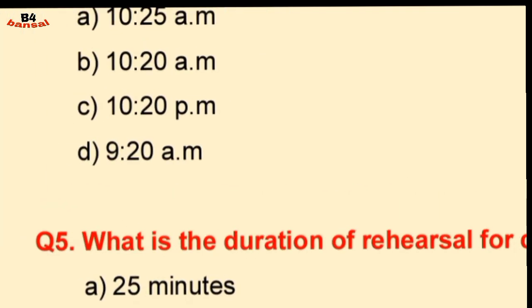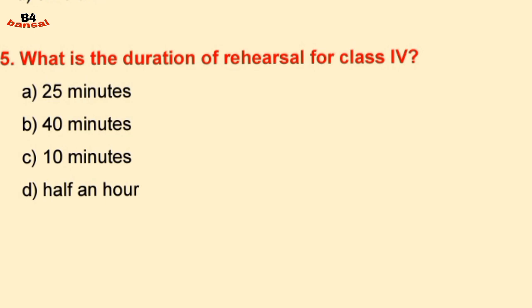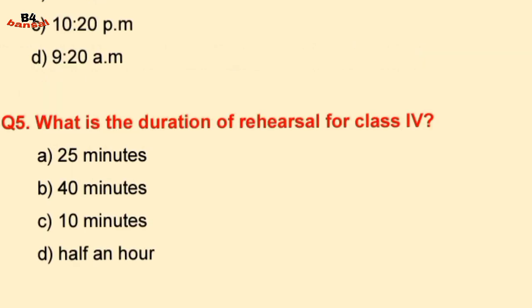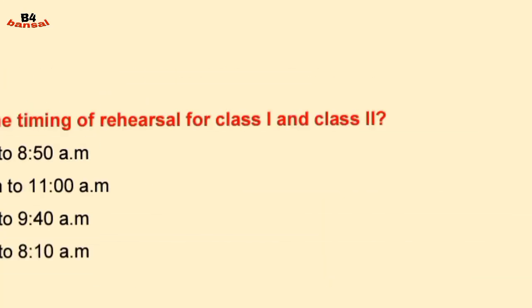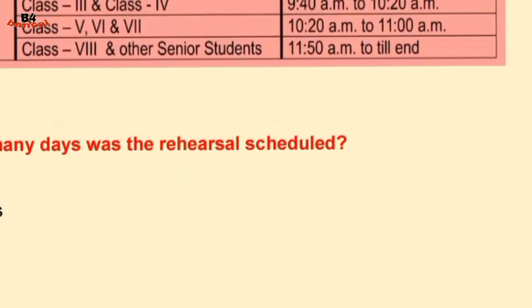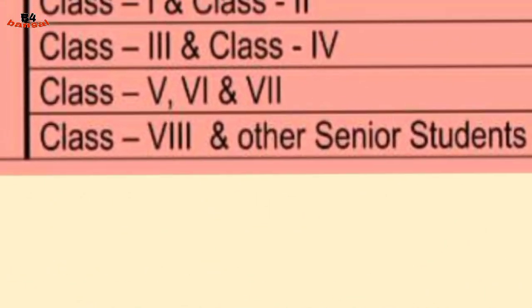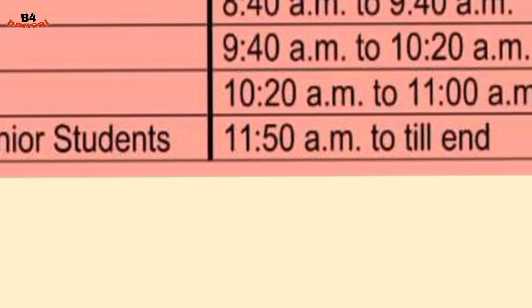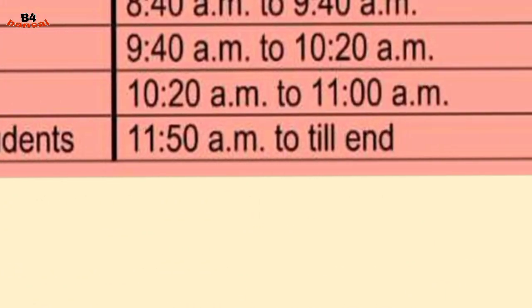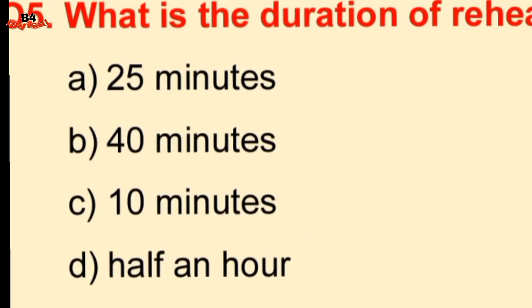What is the duration of rehearsal for Class 4? Class 3 and 4 are grouped together — the rehearsal runs from 9:42 to 10:20, which is 40 minutes. So the duration is 40 minutes.